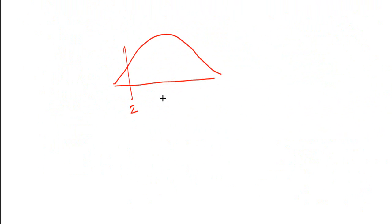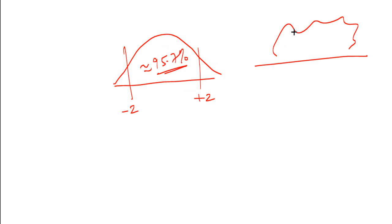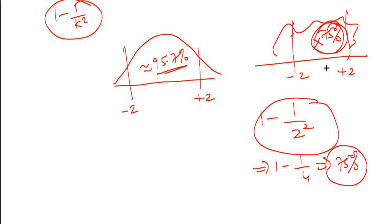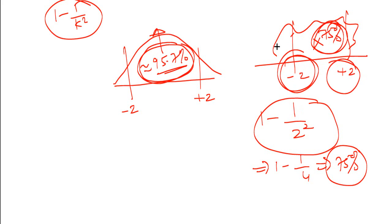Let us see how we can use this. In a normal distribution, the area between plus/minus 2 standard deviations is roughly 95.7%. Now for any unknown distribution, the minimum area between minus 2 and plus 2 is 1 minus 1/2², which is 1 minus 1/4, or minimum 75%. So minimum 75% of the distribution will lie between minus 2 and plus 2 standard deviations. This is consistent with the normal distribution giving 95%, which exceeds the minimum threshold of 75%.